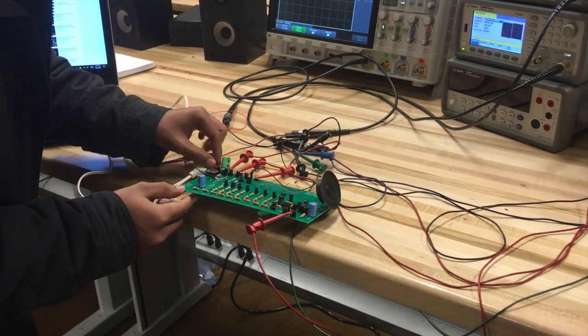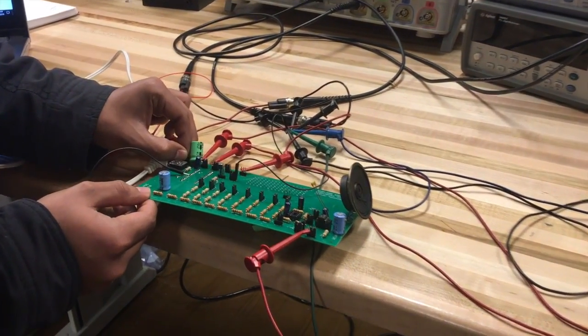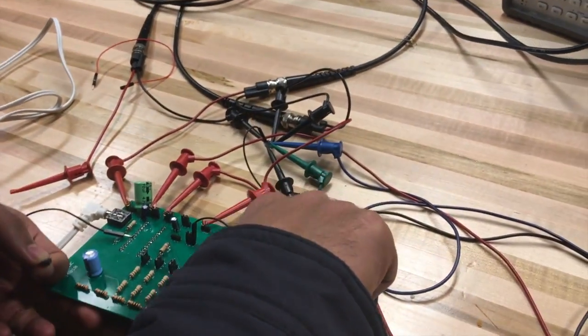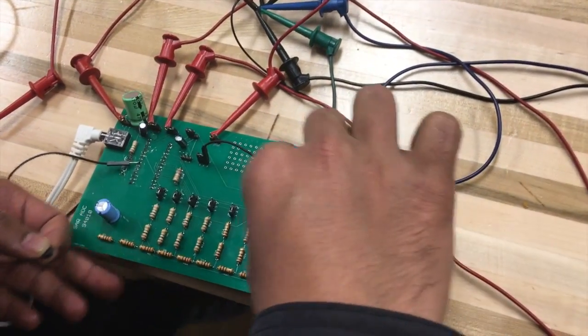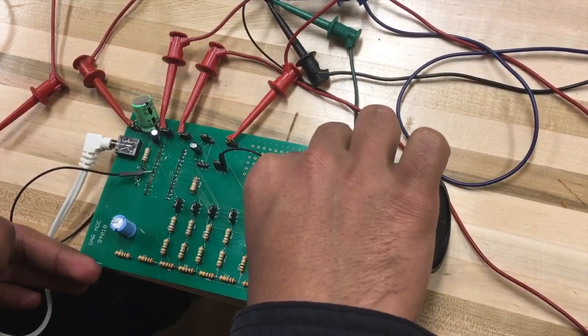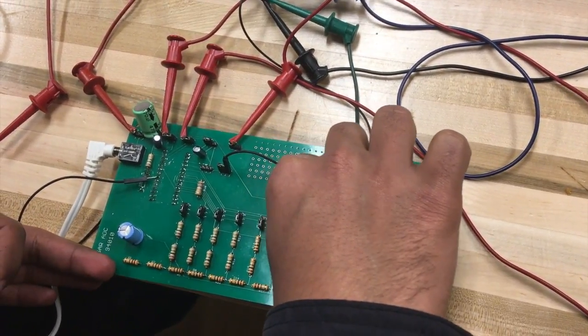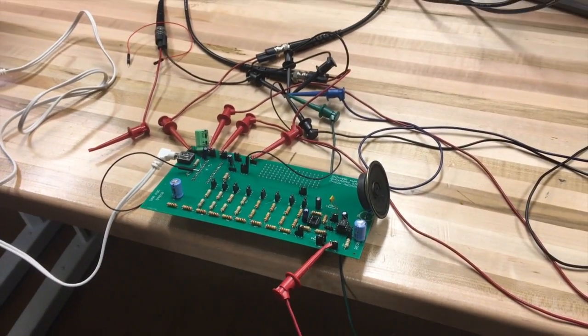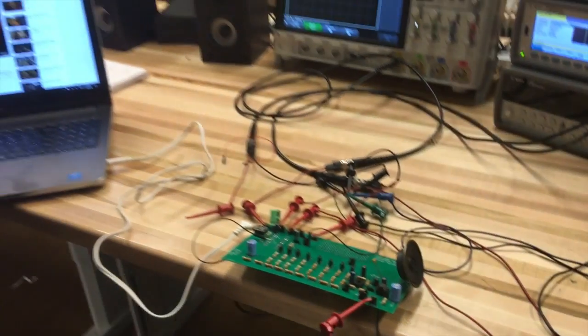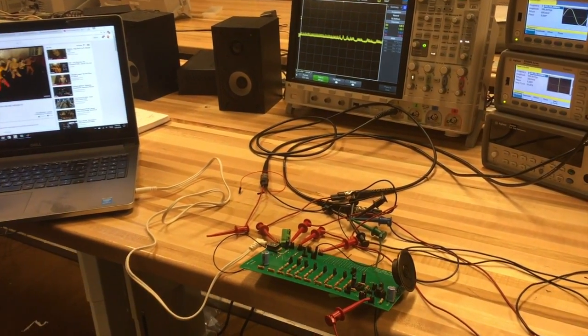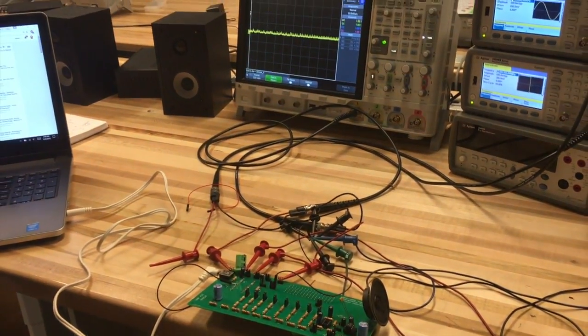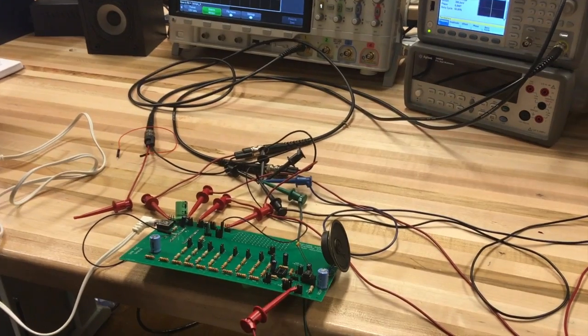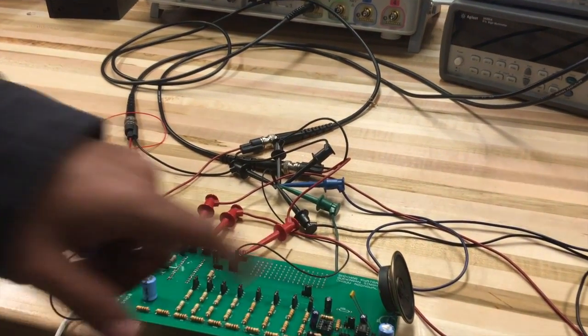Now let's try bypassing the ADC chip and connecting the audio directly to the audio amplifier. Let me reduce the volume. So this is the audio when the music is played directly onto the speaker.